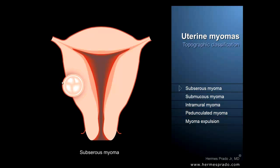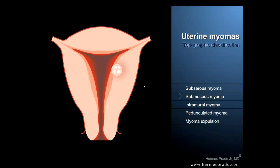If the tumor grows near the external surface of the uterus, just beneath the serous membrane, we call it a subserous myoma or subserous fibroid.